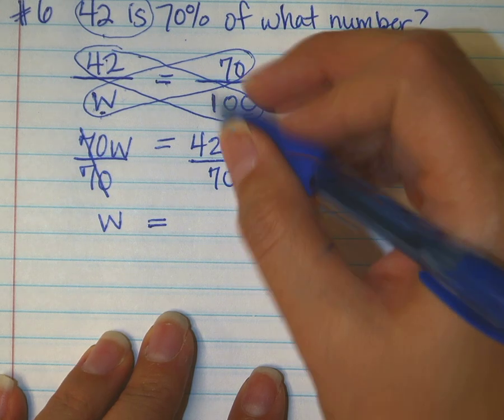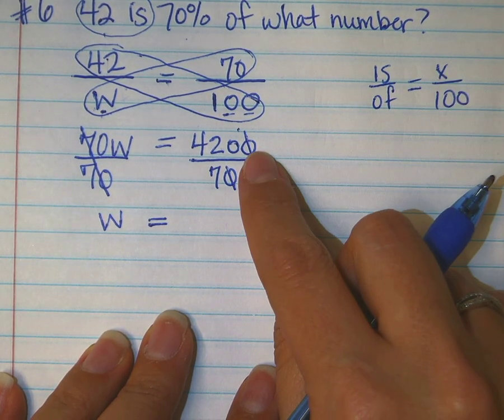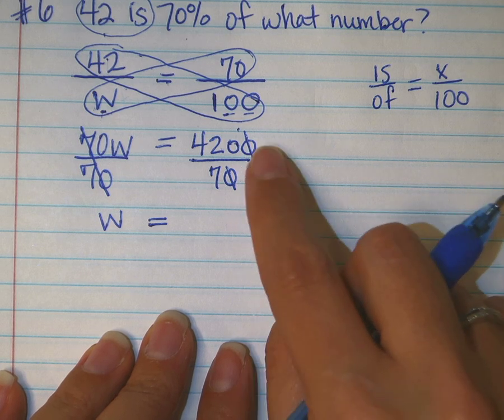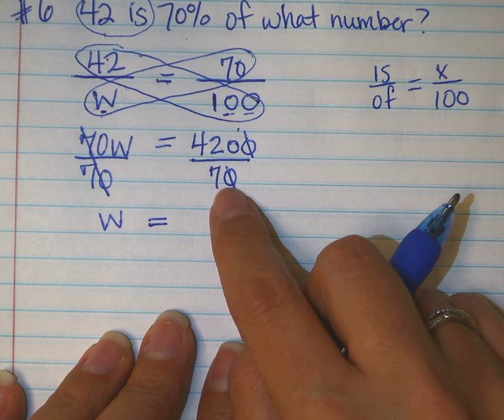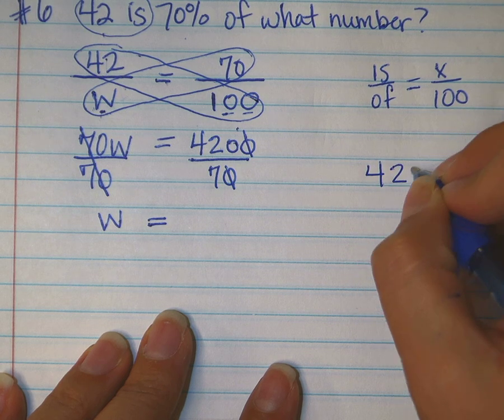Can I show you this shortcut? Divide by 10. 4,200 divided by 10 is 420. So you took away a zero and then I'm dividing the bottom by 10. 70 divided by 10 is 7. Now I'm left with this very easy division problem.